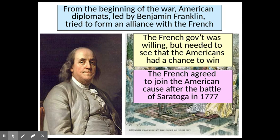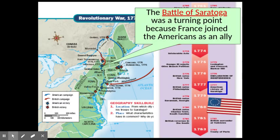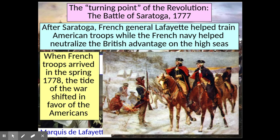Ben Franklin played a huge role during the war — not as a fighter, but as a diplomat to France. His job was to convince the French to help us. The French government was willing because they hated the British, but they didn't want to back a losing cause. They needed to see that the Americans had at least a small chance of winning. They finally saw that after the Battle of Saratoga, which is why that battle was such an important turning point. The French agreed to join the American cause, giving us the Franco-American alliance — providing money, troop support, and naval support. The French general Marquis de Lafayette helped train American troops, and when French troops arrived in the spring of 1778, the tide of the war shifted in favor of the Americans.